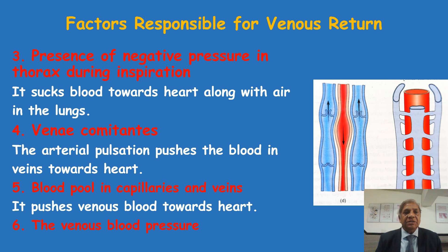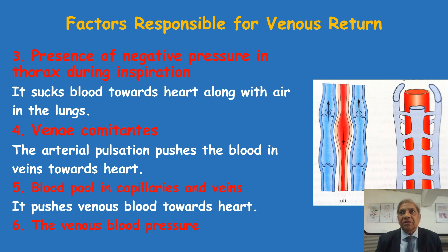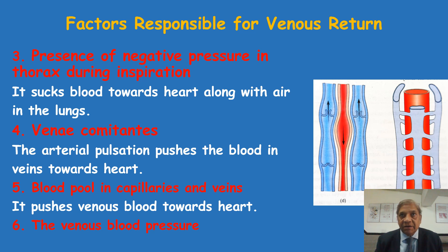The third factor helpful in venous return is the presence of negative pressure in the thorax during inspiration. When we inhale air into our lungs, this is due to the sucking of air — in the pleural cavity where the lungs are present there is a negative pressure which sucks air into the bronchial tree and air goes into our lungs. At the same time, during inspiration, this negative pressure is also sucking blood from the great veins — the inferior vena cava — towards the heart, into the right atrium. So blood is sucked along with the air being sucked into the lungs. This negative pressure is the third important factor in venous return.